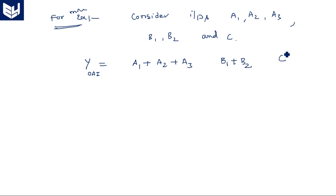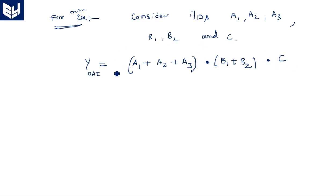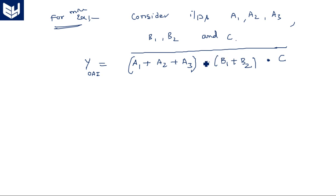Since C is alone, we take it directly without performing any OR operation — if C had multiple inputs like C1, C2, then it would be C1+C2. Now we perform AND operation among these three terms, and the final inverting form gives: Y = (A1+A2+A3)·(B1+B2)·C, whole bar. This is called the OR-AND-INVERT form.